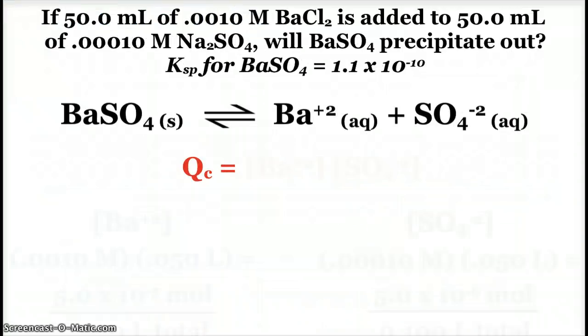So it looks like this. If I have 50 milliliters of 0.001 molar barium chloride added to 50 milliliters of 0.001 molar sodium sulfate, will barium sulfate precipitate out? Again, not worried about sodium chloride, completely soluble. So I focus on my barium sulfate reaction, and I see that my Q expression would be concentration of barium times concentration of sulfate.